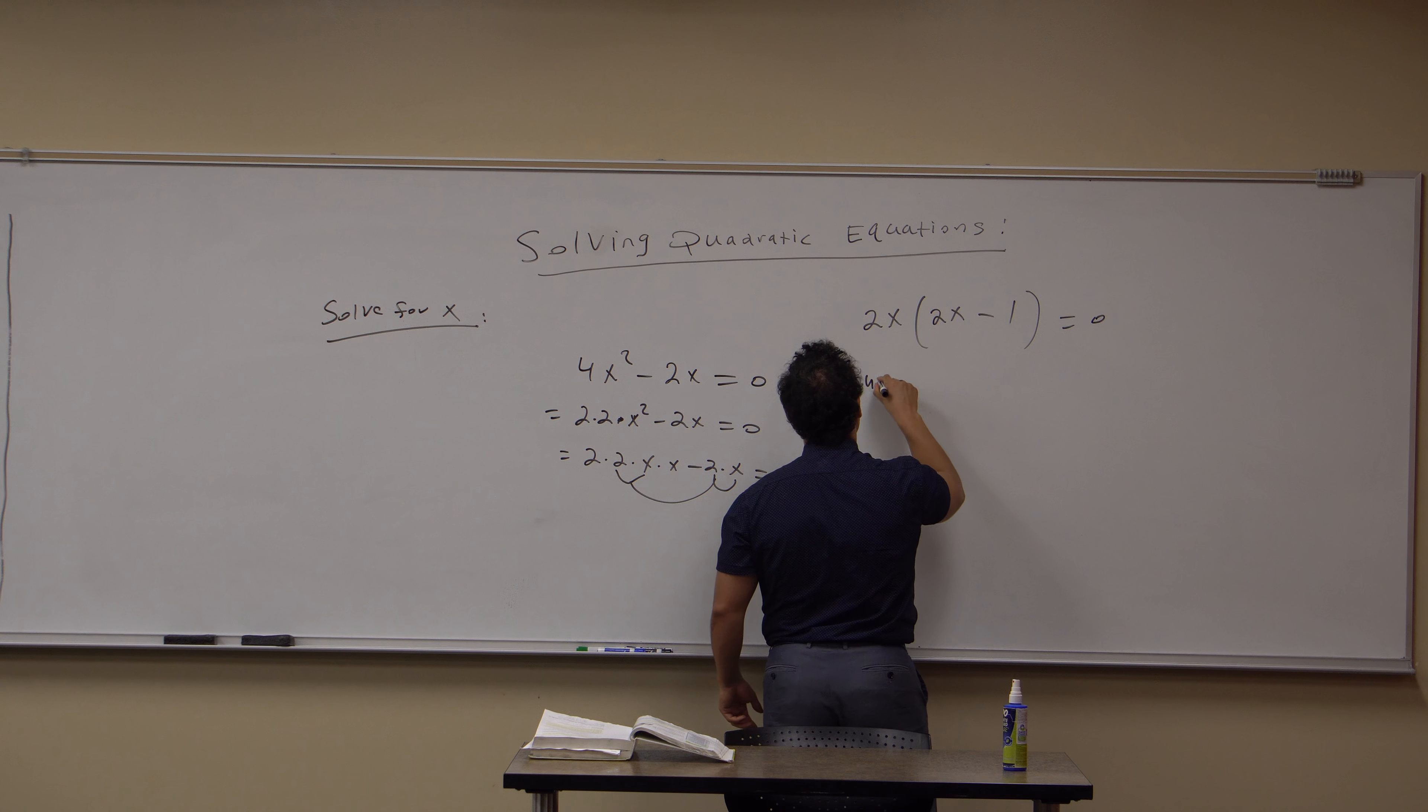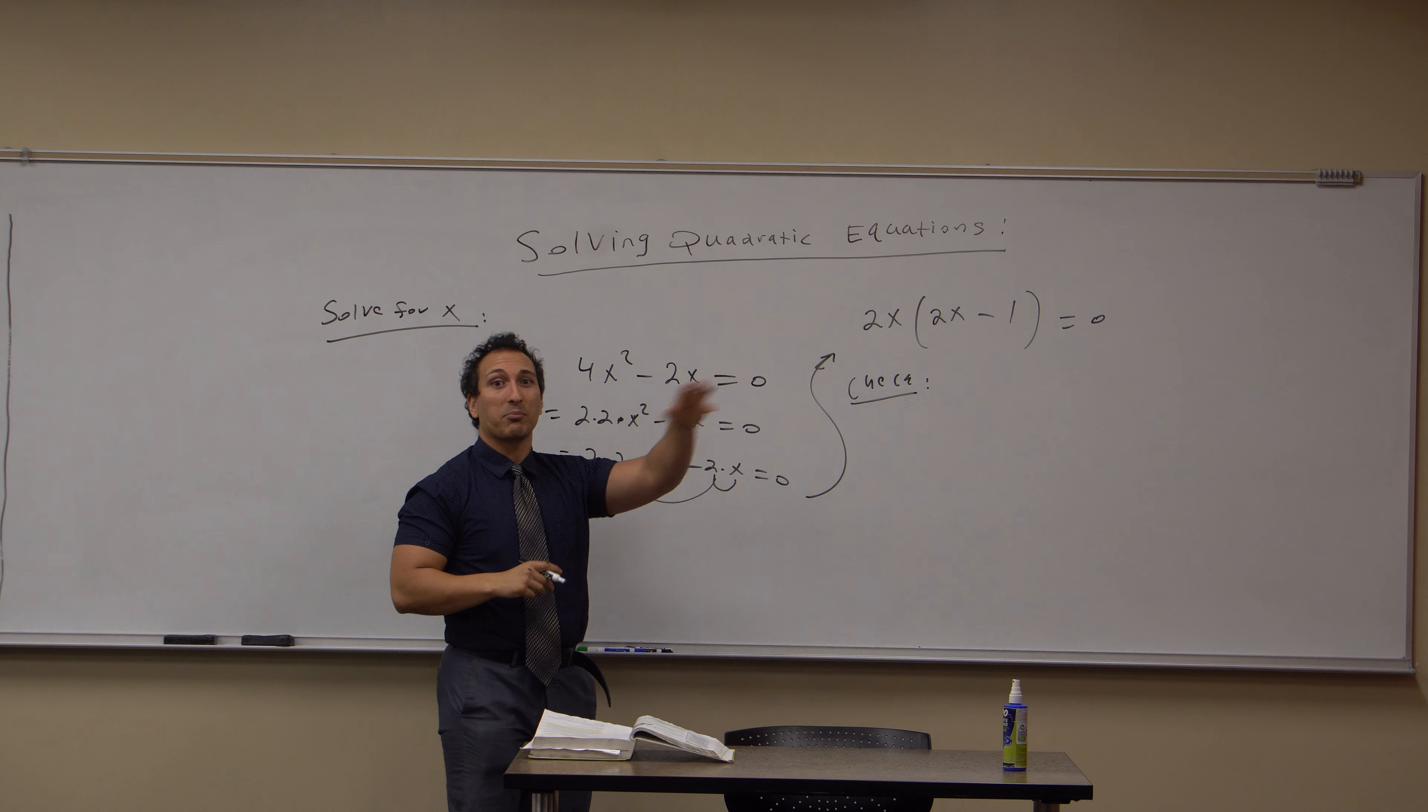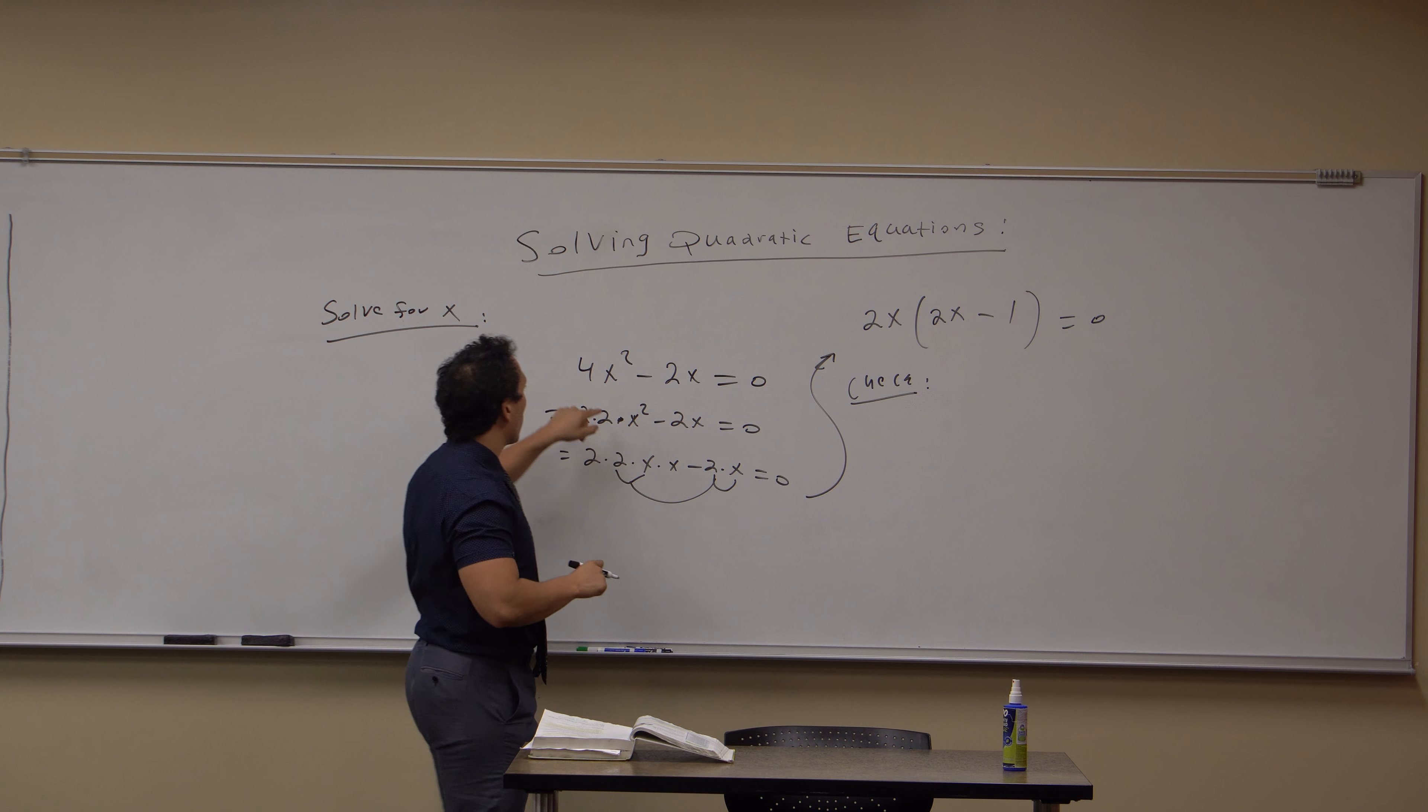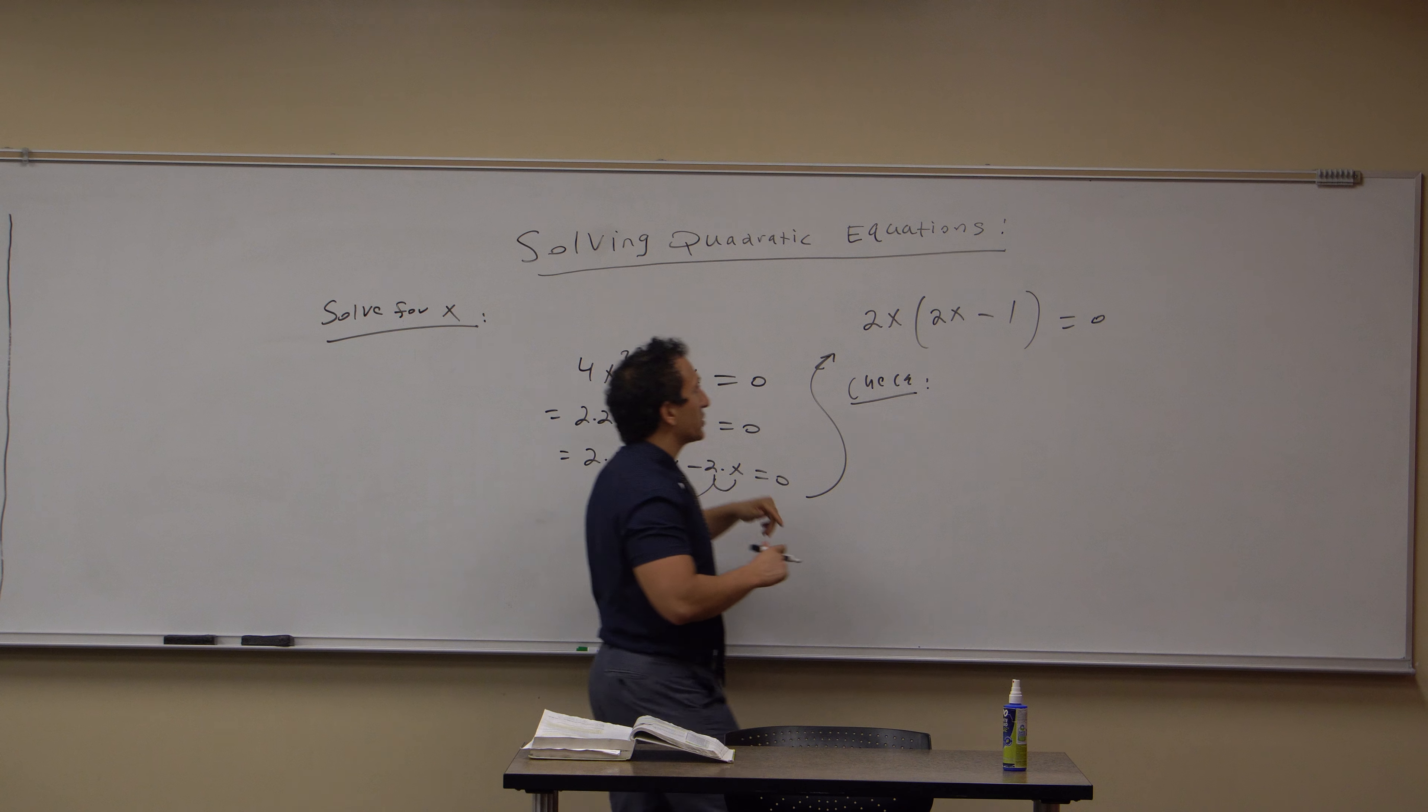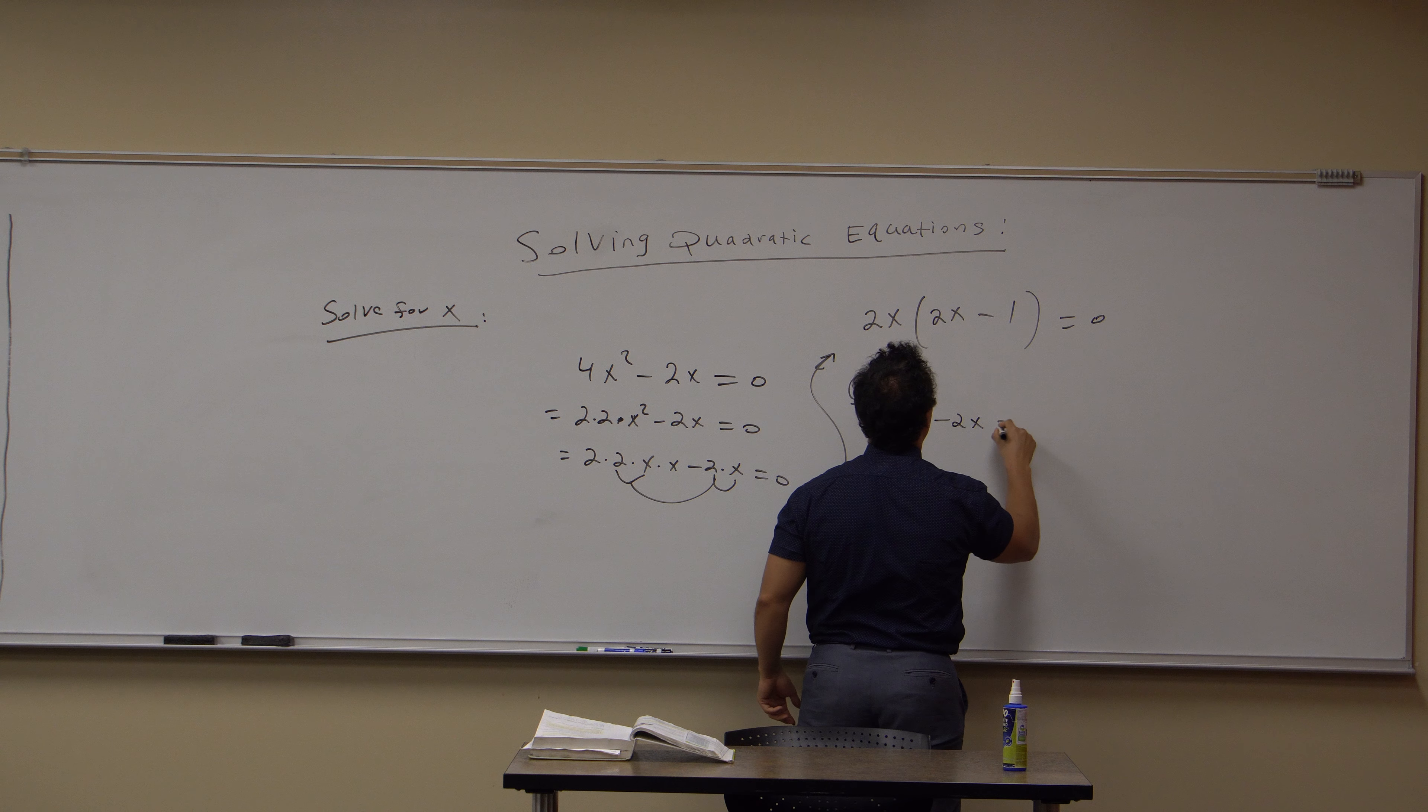Here's our check. You can always check if you factored correctly by just sending it back through. You should restore the original quantity that you had before. So let's check it. Let's send this 2x back into this. So that's 4x² - 2x, and that equals 0.